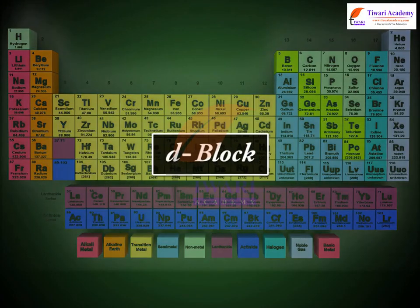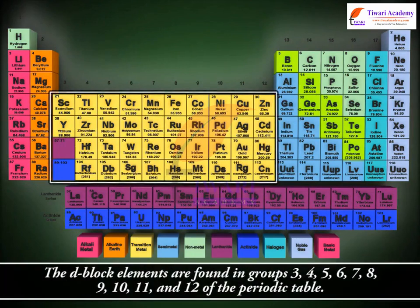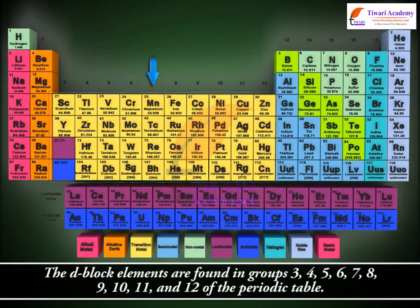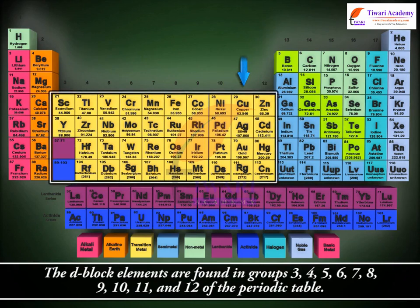D block. The D block elements are found in groups 3, 4, 5, 6, 7, 8, 9, 10, 11 and 12 of the periodic table.